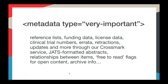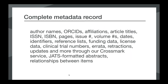We collect a lot of other metadata as well. It's not traditional bibliographic metadata, but it can be just as important for describing your content and where it sits in relation to other scholarly objects. We collect information about where you're going to archive your content, free-to-read information for open access content, reference lists, funding data, license data, clinical trial numbers, information about errata, retractions, updates through our Crossmark service, and information about relationships between items. Together, it all adds up to a complete metadata record. We only really require bibliographic metadata, but a complete record will help place your content on the scholarly map.